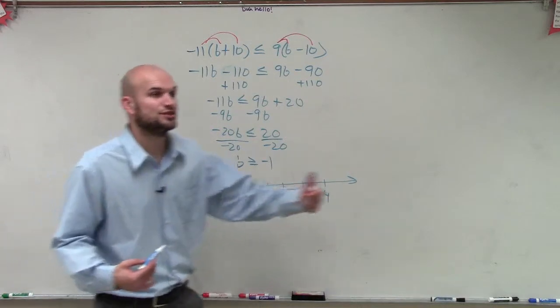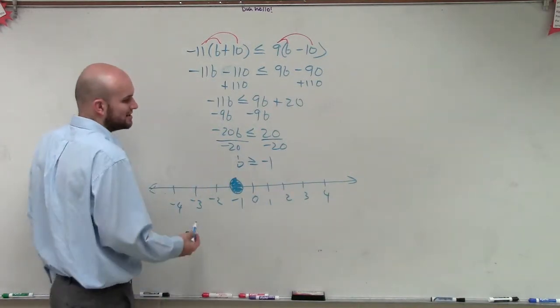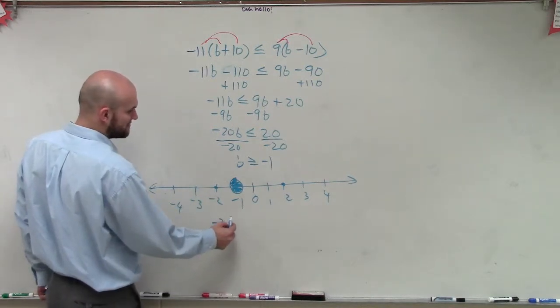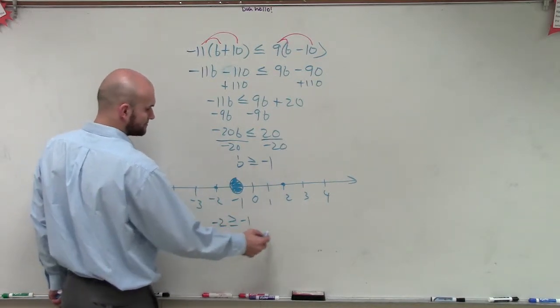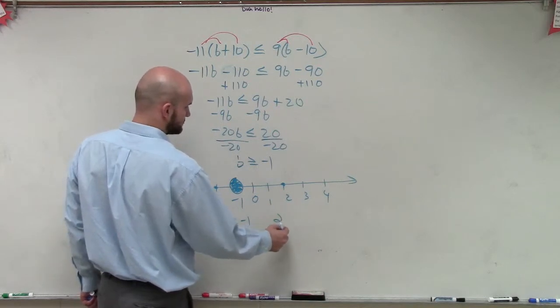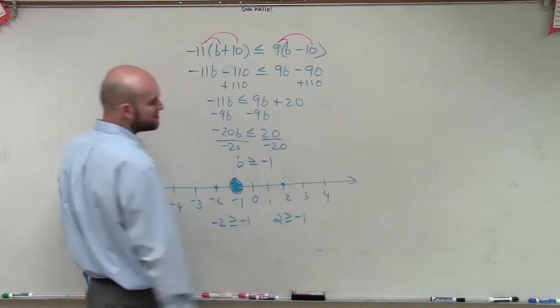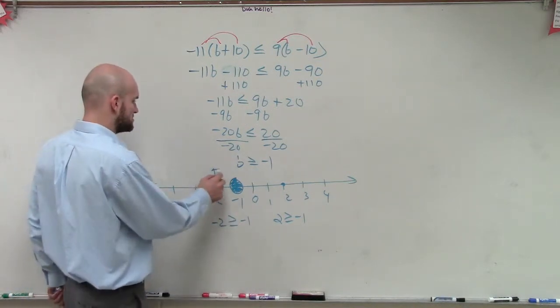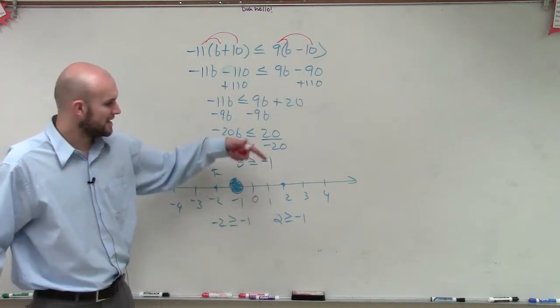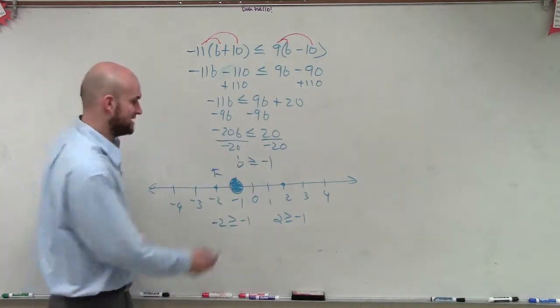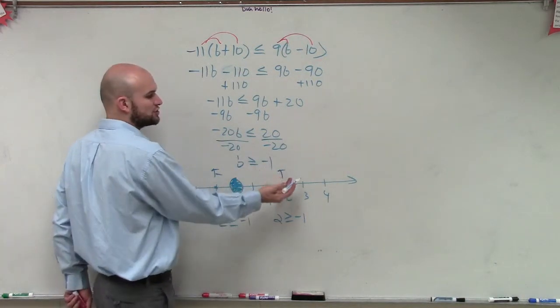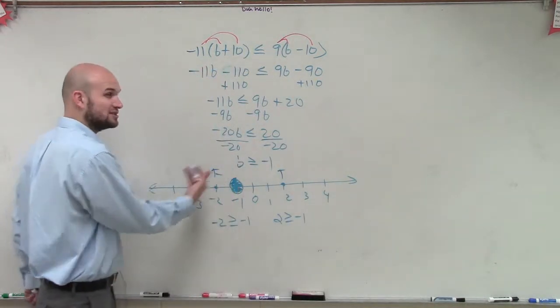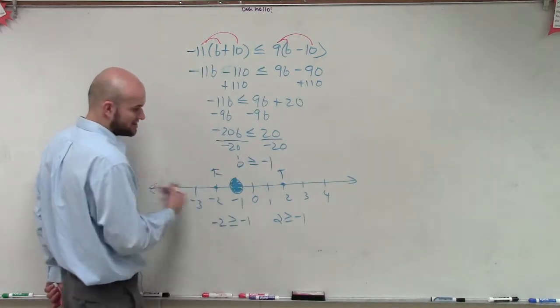Now we need to determine are we going to shade to the right or to the left. So we can just pick two points. Let's just pick 2 and negative 2. So what I do is I plug in those values in for my variable. And then we just read them out loud again. Is negative 2 greater than or equal to negative 1? No. That's false. Is 2 greater than or equal to negative 1? That is true. So therefore, if it's true to the right of our point, that means all the other points are true. And if it's false to the left, that means all the other points are false.